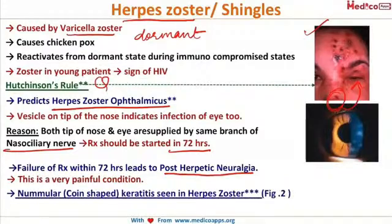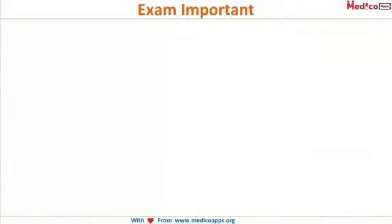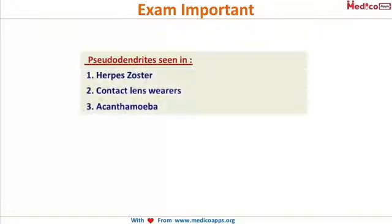Another form is numular keratitis — 'numular' means coin-shaped. Look at these coin-shaped opacities characterizing numular keratitis seen in herpes zoster. In herpes zoster you also see pseudodendrites, unlike the true dendrites of herpes simplex. For a quick revision: pseudodendrites are seen in herpes zoster, contact lens wearers, and acanthamoeba infection.